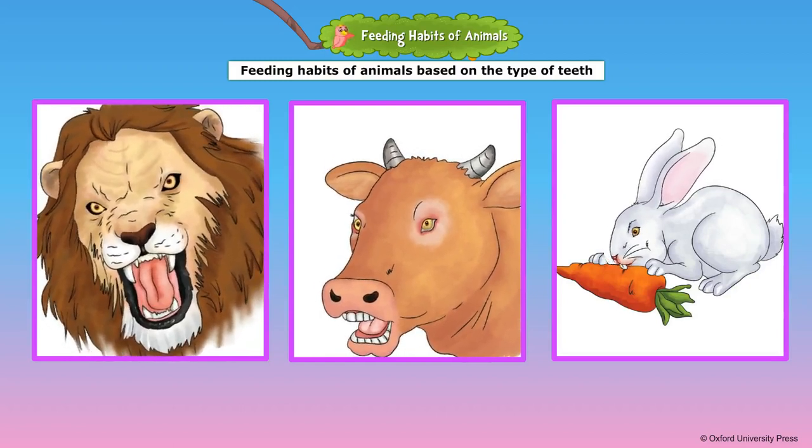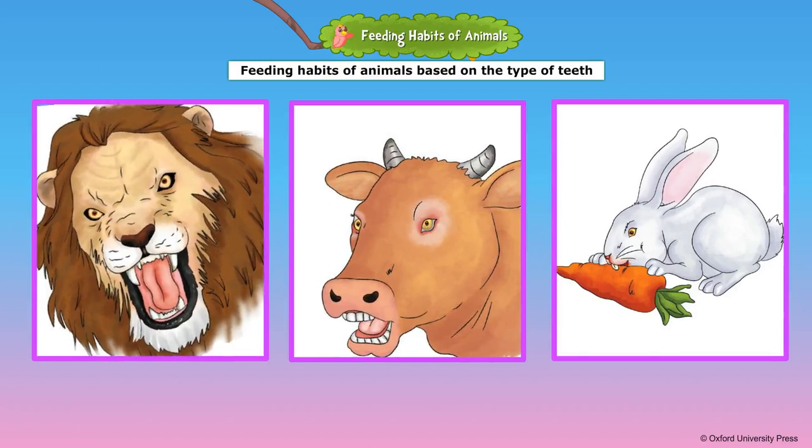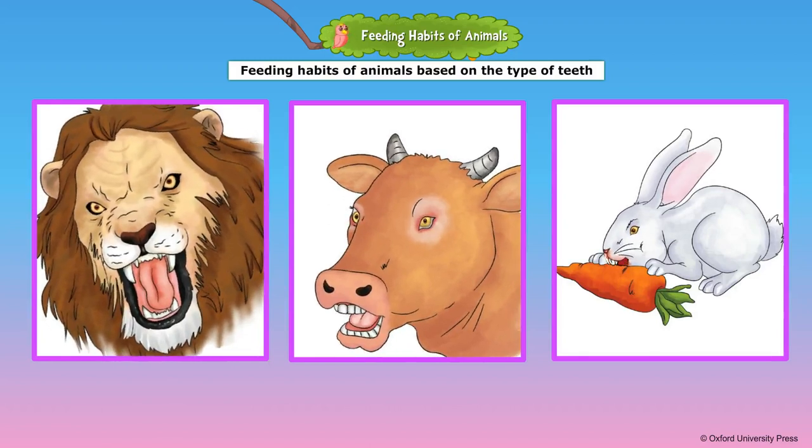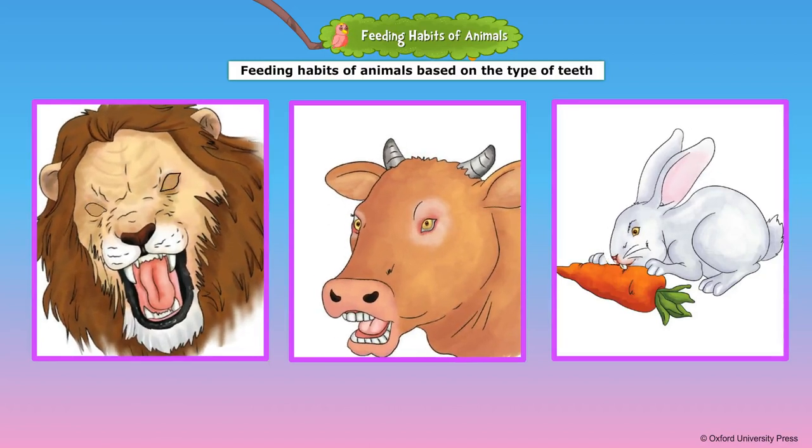Animals such as rats, squirrels, beavers, and rabbits are called rodents. They have very sharp front teeth that are useful in cutting nuts, fruits, and seeds. Rats can gnaw even wooden boxes.